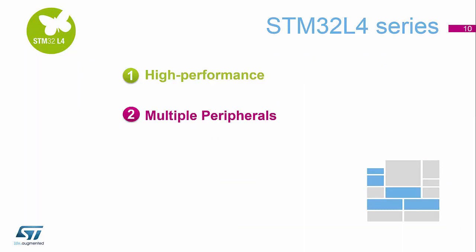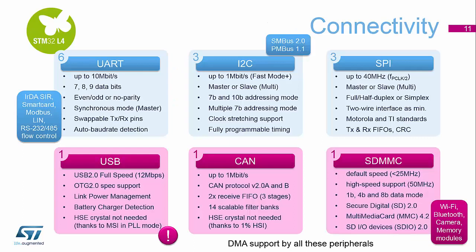As you can see, there's plenty of information to help you set the high performance. Now we're going to have a look at some of the peripherals on board the STM32 L4. Despite being low power, as we've already shown, it's high performance. There is a lot of connectivity in this device — we have up to six UARTs available on the larger pin count variants of this family, where you can get up to 10 megabits per second of data transfer.